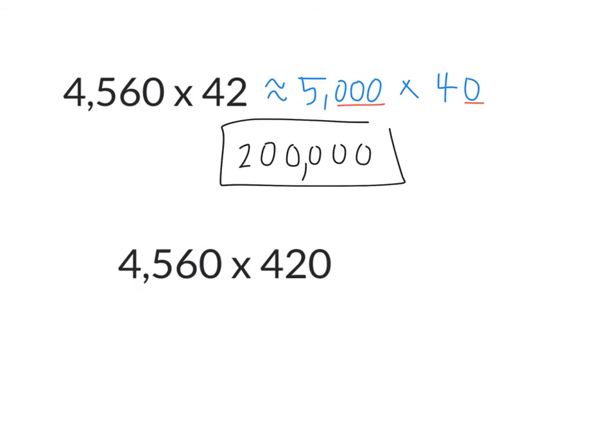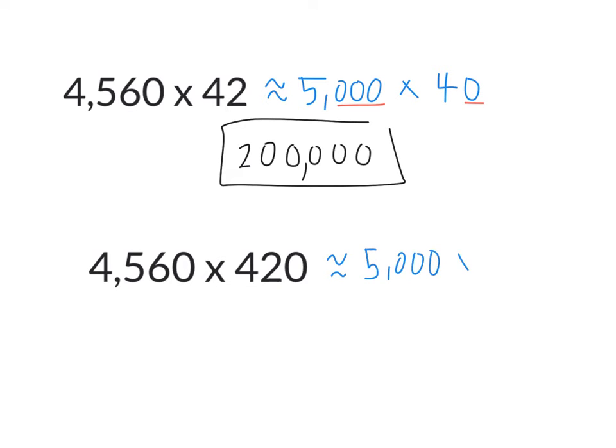What about this one? 4,560 times 420. What's the biggest unit that has value in the first one? It's the thousands. So, if I round that to the thousands, what would it be? 5,000. What about 420? What's the biggest unit that has value this time? It's the hundreds place. So, if I round that to the hundreds, 420 is pretty close to 400. So, now I have 5,000 times 4 hundreds. Again, I can do 5 times 4, which is? 20. Use what I know about math facts and multiplication facts, 20. Then I have thousands times hundreds. What's thousands times hundreds? It's 10,000, isn't it?